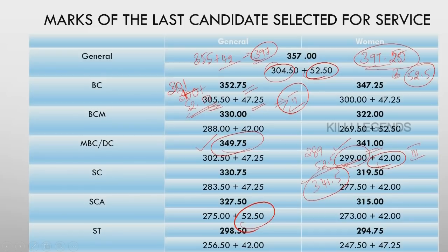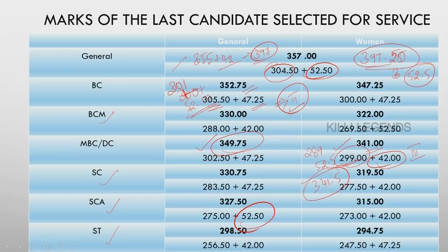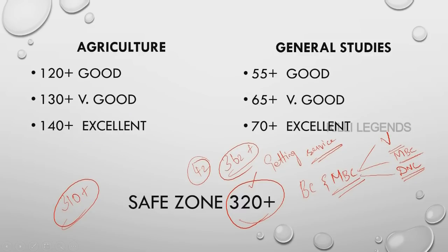Other categories — BCM, SC, ST category: if you look at the cut-off, I can say 310 plus — you are under save zone. 327, 330 and then 330. You can see 310 plus as save zone.